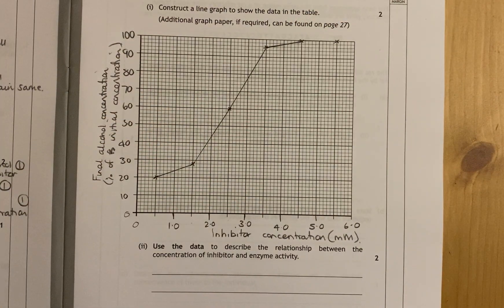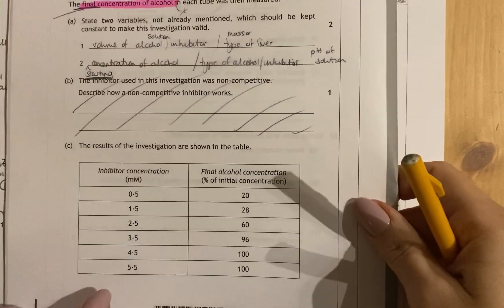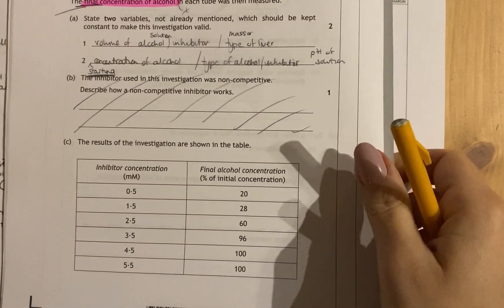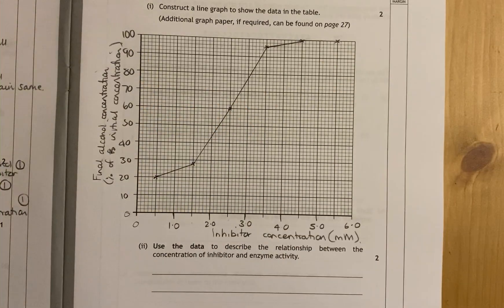So my points are plotted. Notice how I've not joined us to zero, because there is no point on my table where it says zero and zero. One mark for your scales and your labels, and one mark for your correctly plotted line.